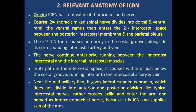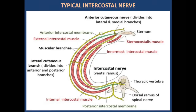Near the mid-axillary line it gives a lateral cutaneous branch, like all typical spinal nerves, but unlike a typical intercostal nerve it does not divide into anterior and posterior cutaneous branches. Instead, it crosses the axilla and enters the arm, named the intercostal brachial nerve because it is an intercostal nerve that supplies the skin of the arm. This is shown in a diagram: the mixed spinal nerve gives ventral and dorsal branches, and at the mid-axillary line the lateral branch moves to the arm without dividing.